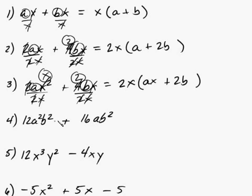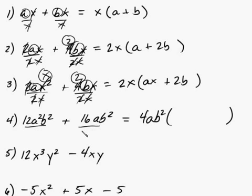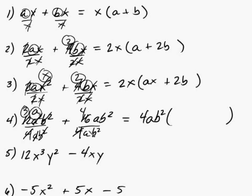For this one, the common numerical factor is 4. We have a squared and a — lower degree is a. We have b squared in both terms, so we factor out b squared. Set up your parentheses and divide both terms by 4ab squared. Four goes into 12 three times; b squared cancels with b squared; a goes into a squared once, leaving a. Four goes into 4 once; a and b squared cancel. So you're left with 3a plus 4, giving 4ab² times (3a plus 4).